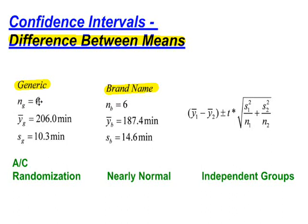For the generic batteries, I tested six of them. I got an average time of 206 minutes that they last with a standard deviation of 10.3 minutes. For the brand name batteries, again, I checked six. The average time that they lasted was 187.4 minutes with a standard deviation of 14.6 minutes.